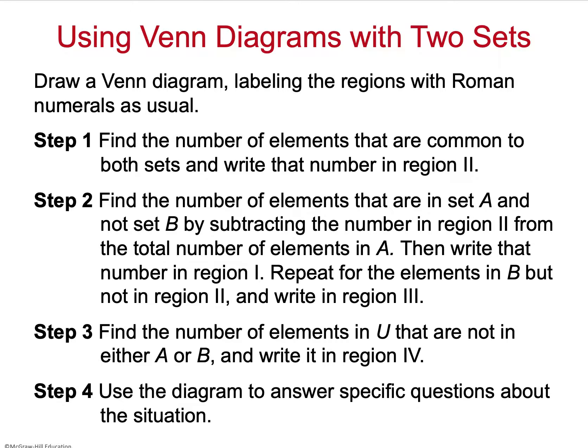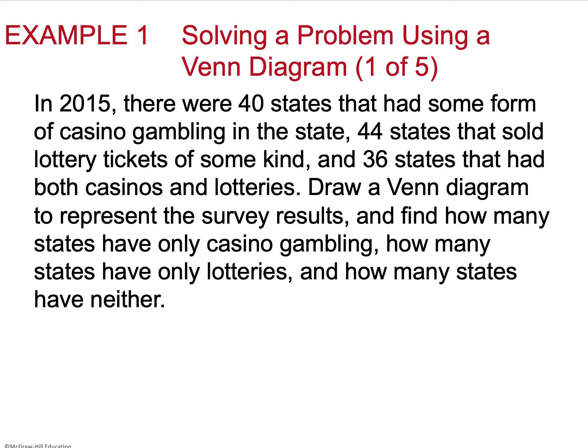We're going to find the number of elements that are in both sets to write in the regions, find the elements that are in set A but not B, and then write those in the appropriate regions and follow through each step until we get to the very end.